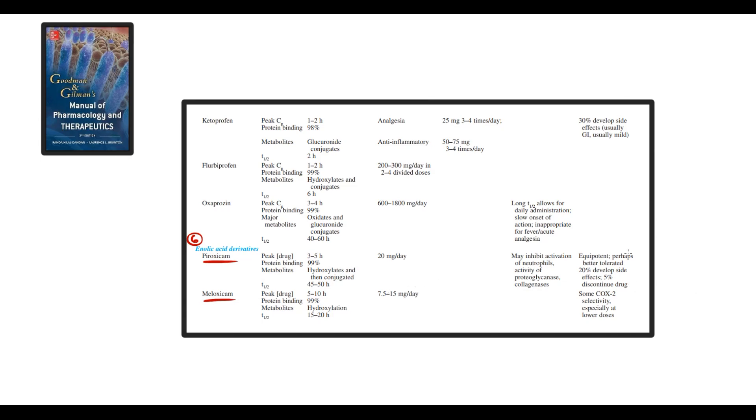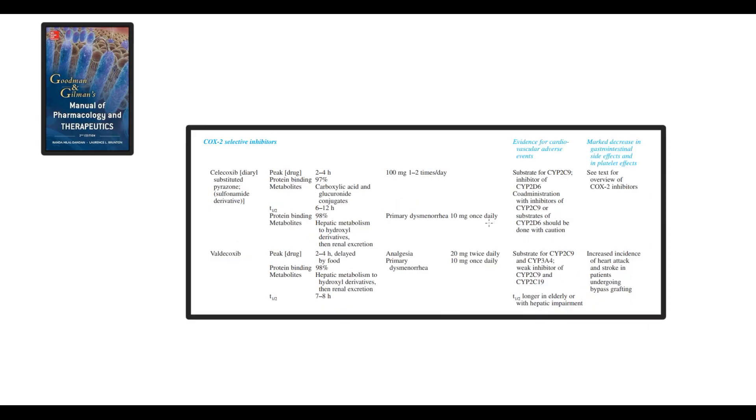The last class of non-selective NSAIDs is enolic acid derivatives as piroxicam and meloxicam. These two drugs have lower risk of side effects compared to other non-selective anti-inflammatory agents. Selective COX-2 inhibitors include celecoxib and valdecoxib.